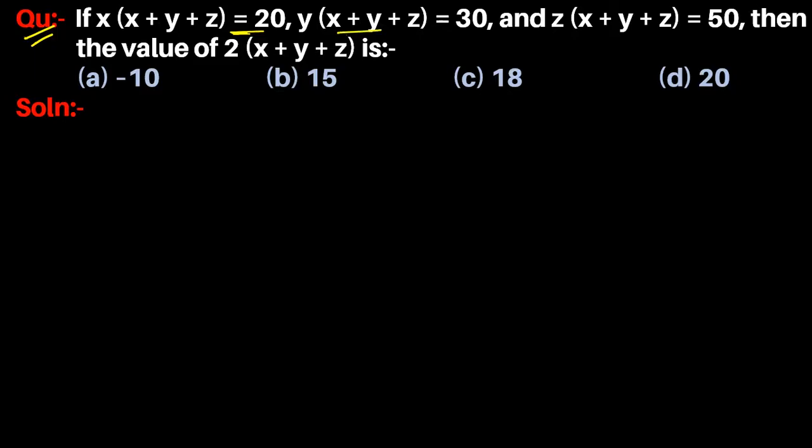In this question we have 3 equations and we need to find 2(x + y + z). First, we write the 3 equations: x(x + y + z) = 20 and y(x + y + z)